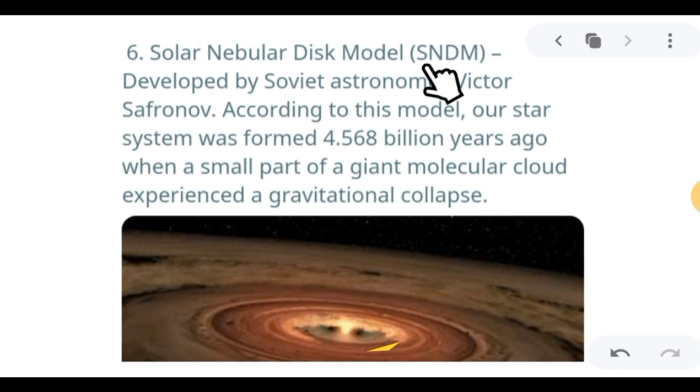Next we have the sixth theory, the Solar Nebular Disk Model or SNDM. It was developed by Soviet astronomer Victor Safronov. According to this model, our star system was formed 4.568 billion years ago when a small part of a giant molecular cloud experienced a gravitational collapse. This finding is nearer to the approximated present age of the solar system.